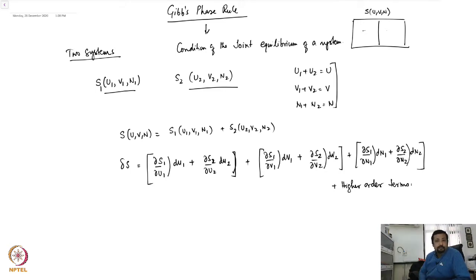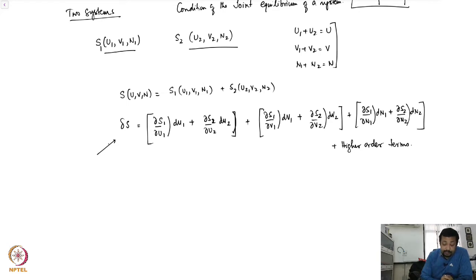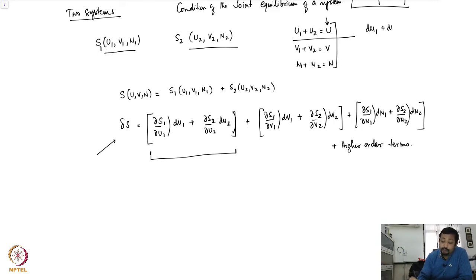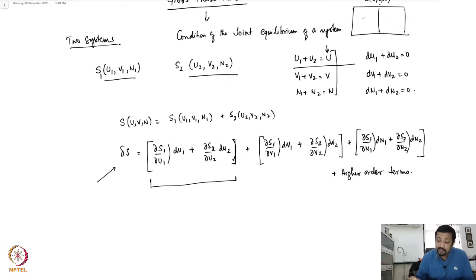At the joint equilibrium point, delta S equals zero — that is the stability criteria for a stable equilibrium point. Since U is fixed, dU1 + dU2 = 0. Similarly dV1 + dV2 = 0 and dN1 + dN2 = 0. You can imagine that if you move the partition infinitesimally to the left or right, the volumes change correspondingly.